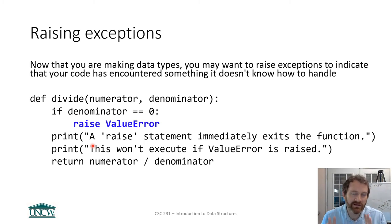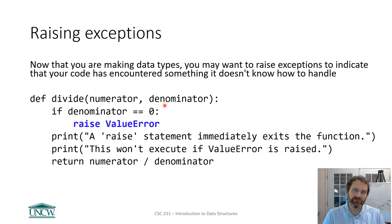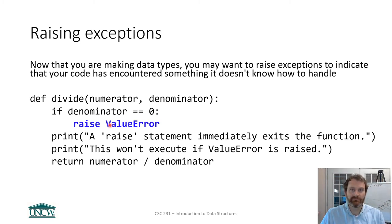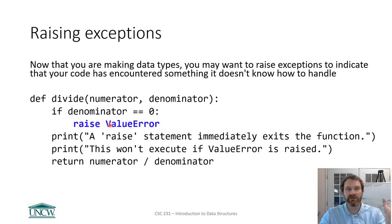Here's how you can do that manually. I've got a simple function called 'divide' that takes a numerator and a denominator. Since you cannot divide by zero, I've introduced a check: if the denominator equals zero, I raise a ValueError using the 'raise' keyword. Unless the programmer using this code catches and handles that exception, you're going to get red stuff all over your screen — it just won't work.